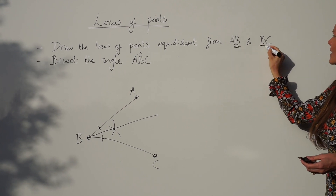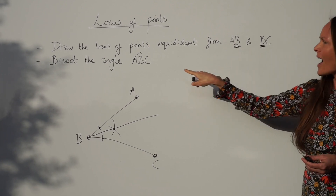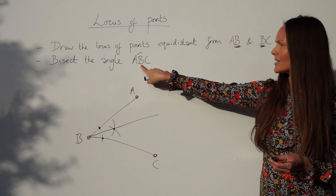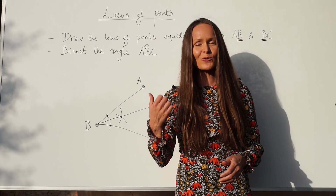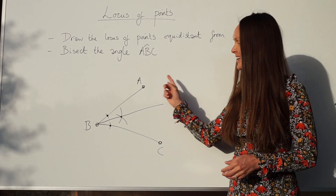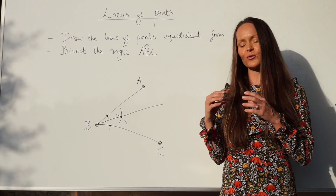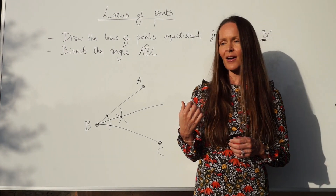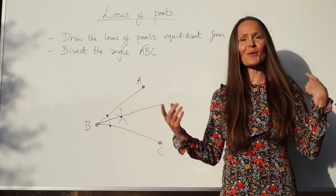The repeated letter is the angle you need to bisect — in this case B. When the question gives three letters like ABC, the middle letter is always the angle you're bisecting. I hope you found these examples on drawing the locus of points easy to understand. At the end of the video I've drawn them accurately on a piece of paper so you can check those out. I'll also have another video coming with locus of points on exam questions, which is usually a lot harder, so keep your eyes peeled.